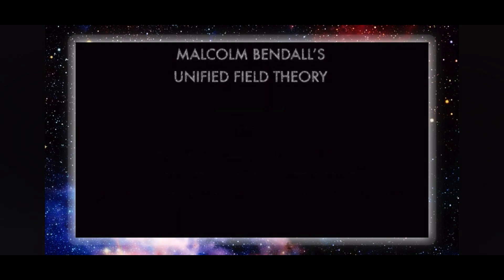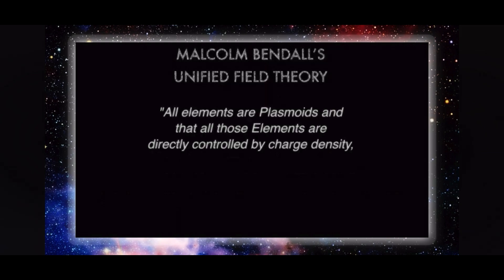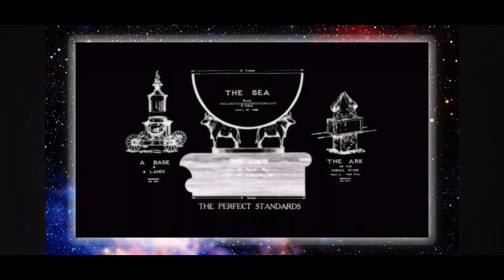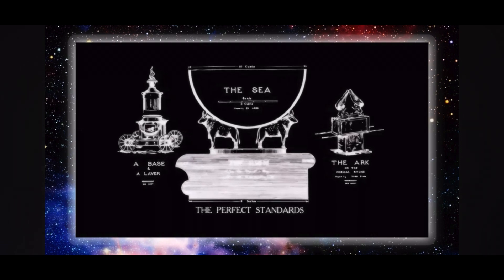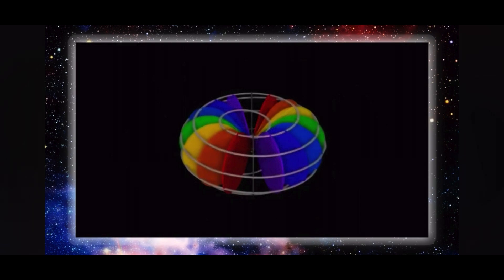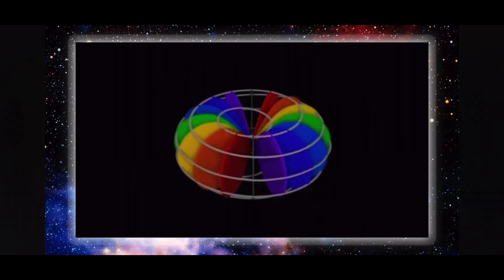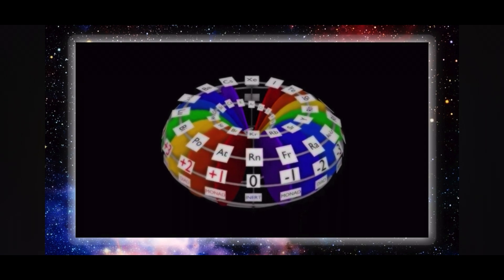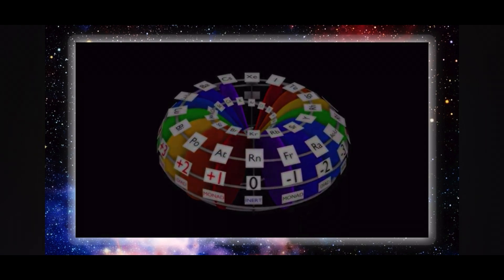The underlying principle of Malcolm Bendel's Unified Field Theory is that all elements are plasmoids and that all those elements are directly controlled by charge density, therefore making charge density the only relevant characteristic when considering zero matter, time, light, and matter. The implosive vortex waveguide is inspired by the Moulton C. Vajra, based on Malcolm Bendel's scientific observations drawn from his Bendel Taurus, which led to his Unified Field Theory, clearly illustrated by his Model of the Elements and his Octave Dimensional Model.